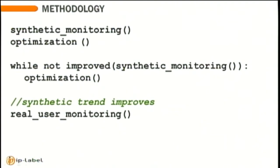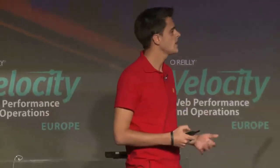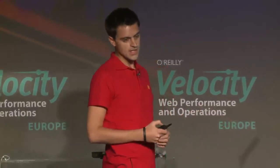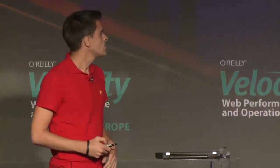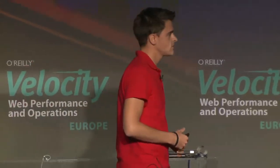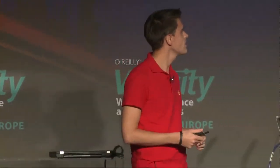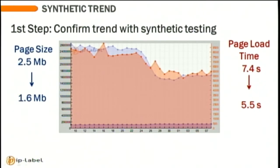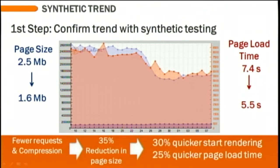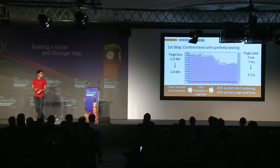You can loop forever. If the optimization is not impacting your synthetic test, there is no benefit. So first, looking at synthetic trends, I saw this nice graph where you see the page size, which slowed down from 2.5 to 1.6 megabytes, and the page load time which was globally about 25% quicker. And even the rendering of the page starts quicker. So the question was: did the real users also have 25% benefits in the loading time?